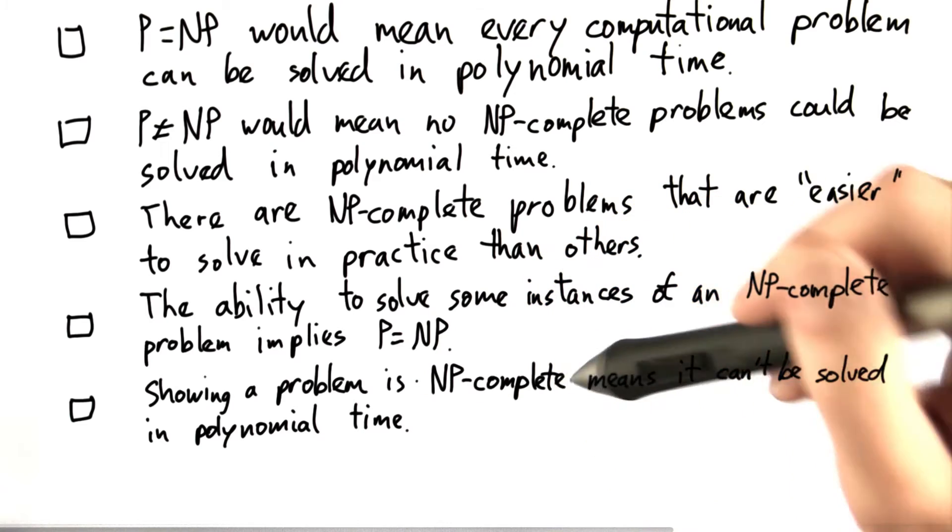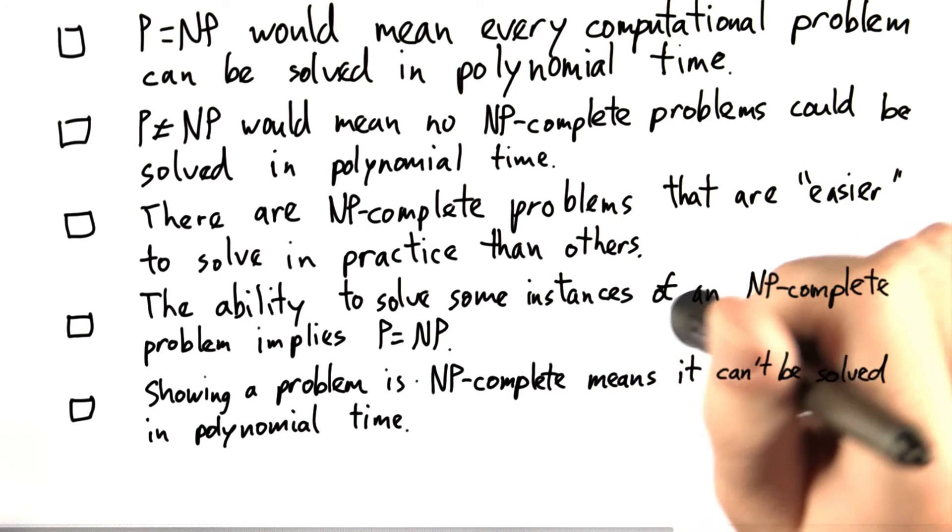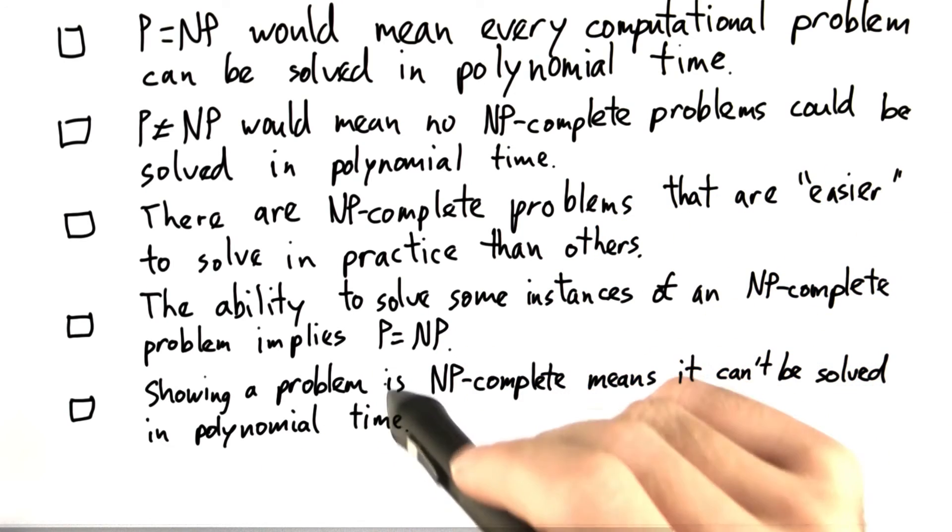We could also say that showing a problem is NP-complete automatically means that we know it can't be solved in polynomial time.